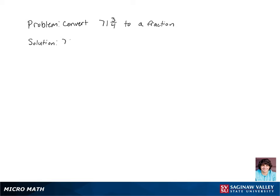Let's convert 71 and 3 fourths to a fraction. One thing to remember is that mixed numbers are just addition — it's our whole number plus our fraction. So 71 and 3 fourths is equal to 71 plus 3 fourths.